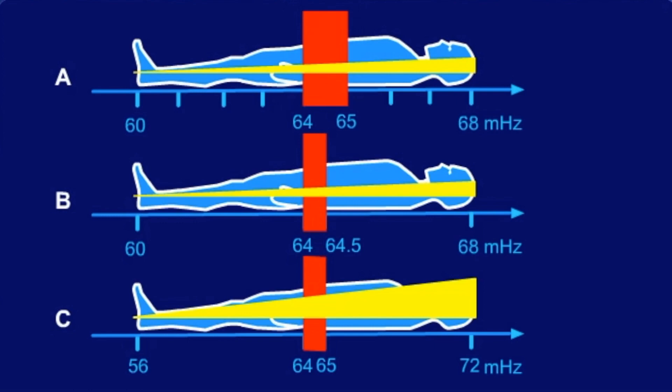So, using the same range of radio frequencies, the same bandwidth as it's called, slice thickness can be modified by the slope of the gradient field.